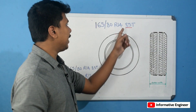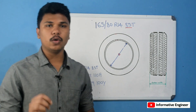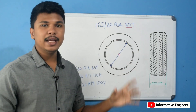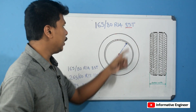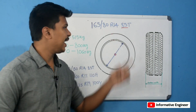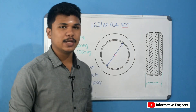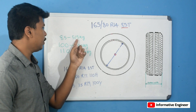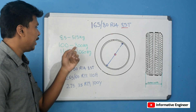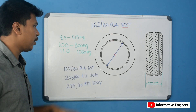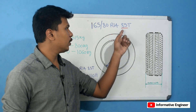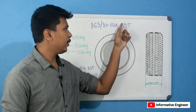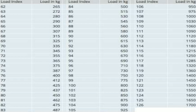The next value is the load index. The load index is the maximum load the tire can carry. At the maximum pressure, the load index represents the maximum load in kilograms. You can refer to a load index table to find all the corresponding values — for example, a load index of 88 corresponds to 1000 kg.